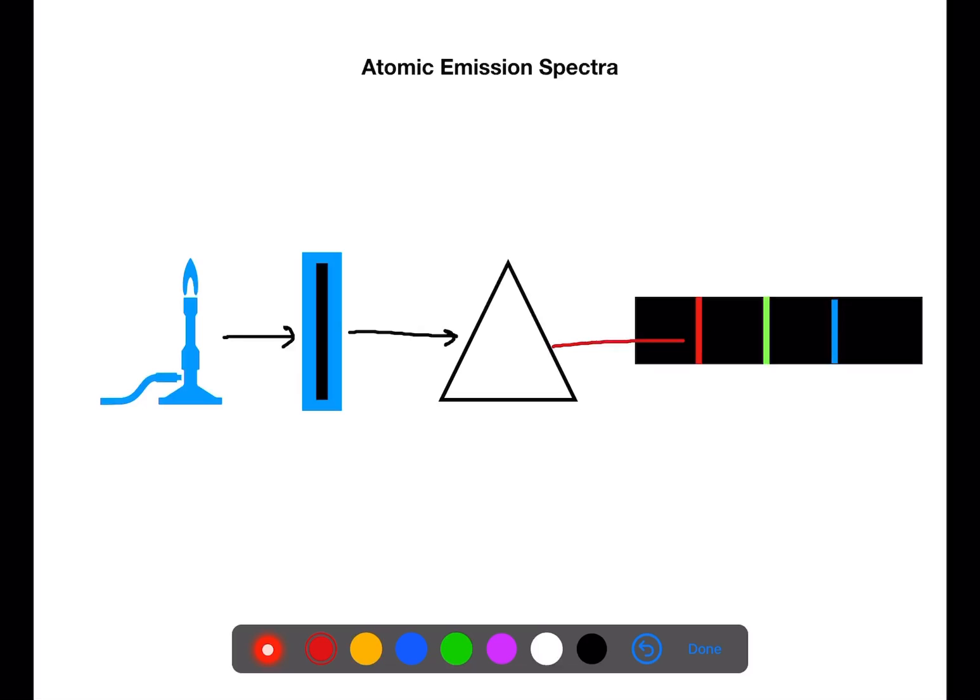Once the light has been passed through a prism this will split up the different wavelengths and we can see that we get a black background with coloured lines. Each of these coloured lines represents one transition of an electron falling back down to ground state.